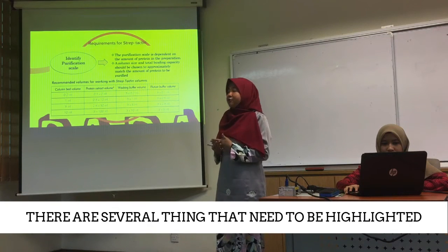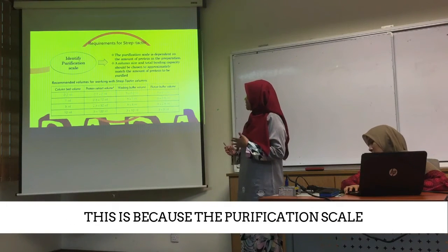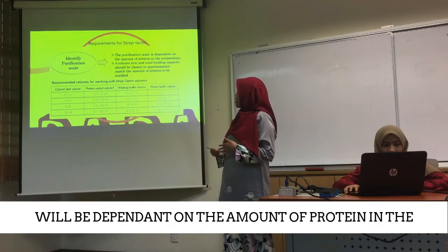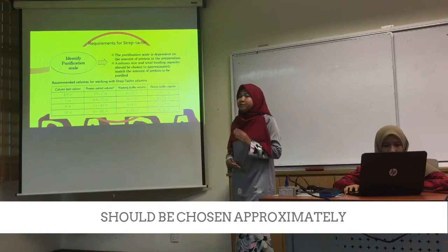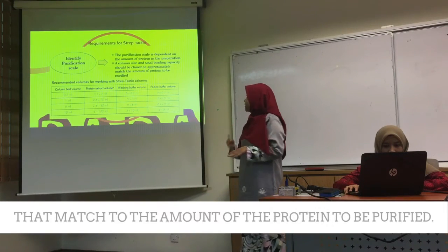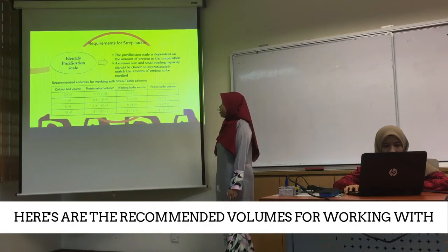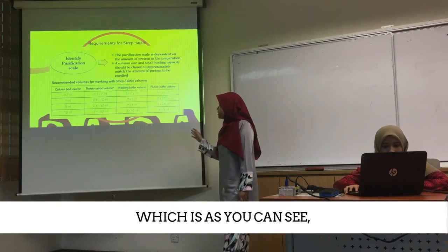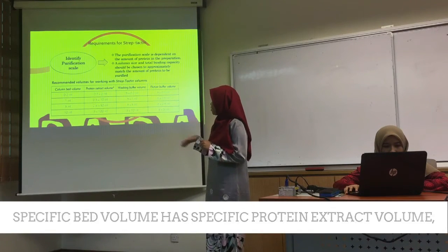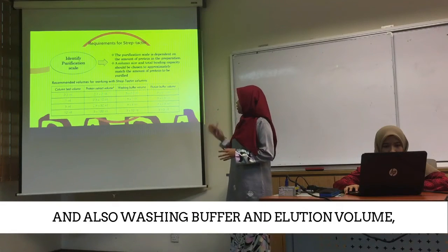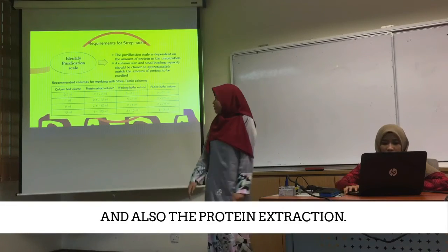There are several things that need to be highlighted. The first is to identify the purification scale, because the purification scale depends on the amount of protein in the preparation. The column size and total binding capacity should be chosen to approximately match the amount of protein to be purified. Here are the recommended volumes for working with the strep tactin column — each volume has a specific protein extract volume, washing buffer, and elution volume that need to be approximately matched to the column and the protein extraction.